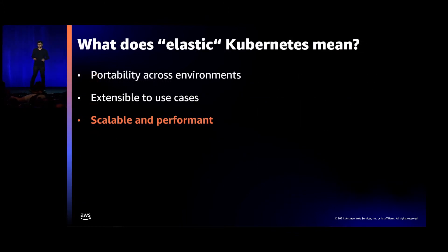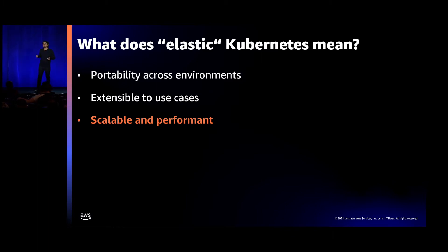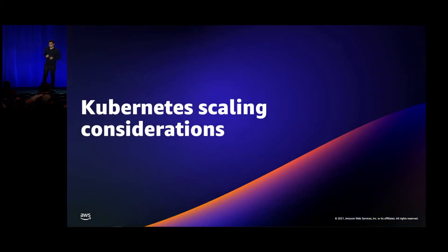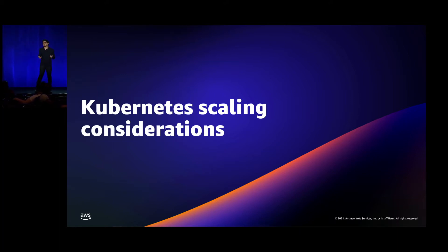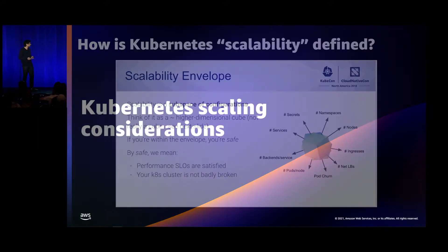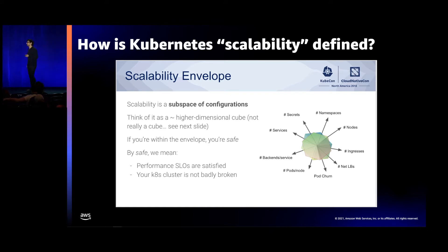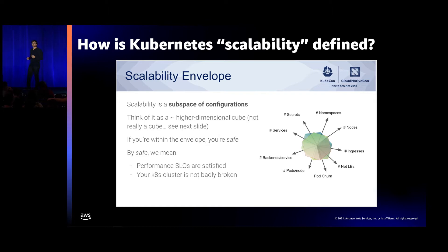While portability and extensibility are common themes, most customer discussions around 'Elastic' end up talking about scalability and performance. Our customers expect a platform where they can scale their workloads seamlessly while continuing to meet their performance requirements. Before diving deep into the strides Amazon EKS has made on scalability, I want to briefly cover some Kubernetes scaling considerations that you should keep in mind. This is a slide I've copied from my KubeCon Seattle 2018 presentation, where I pitched the notion of a scalability envelope.